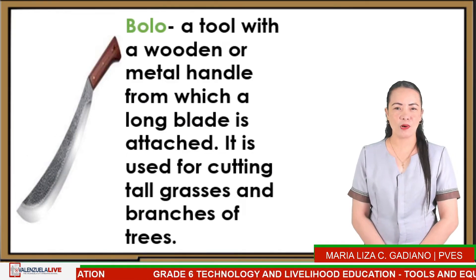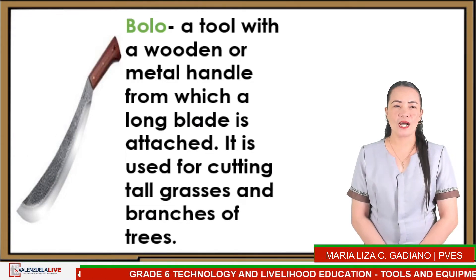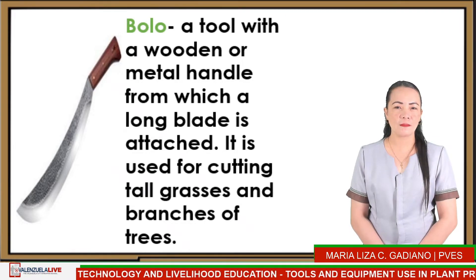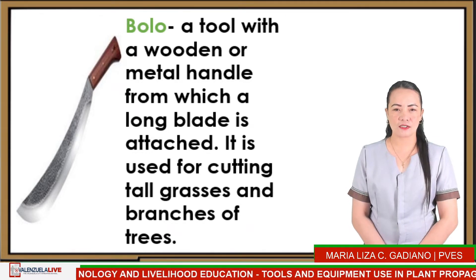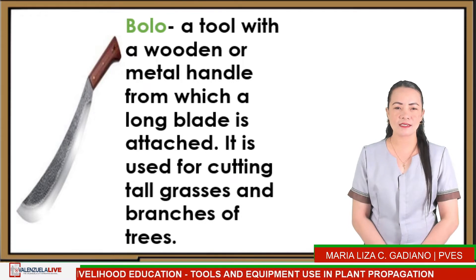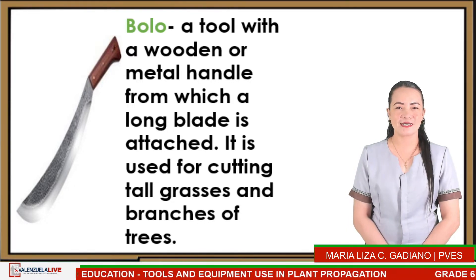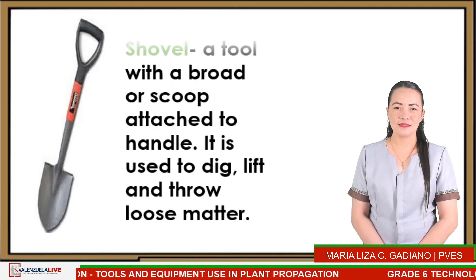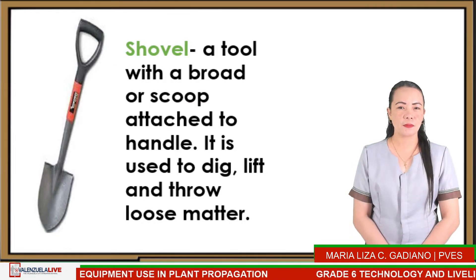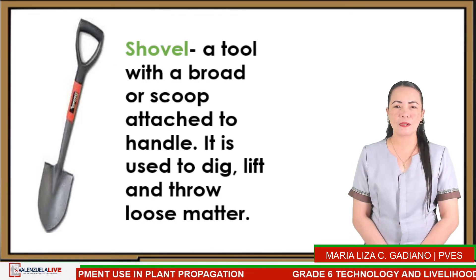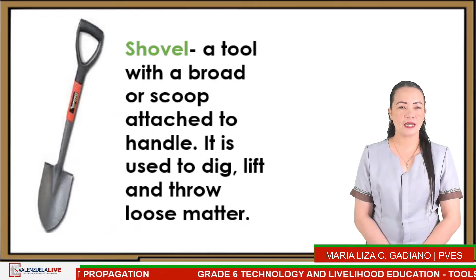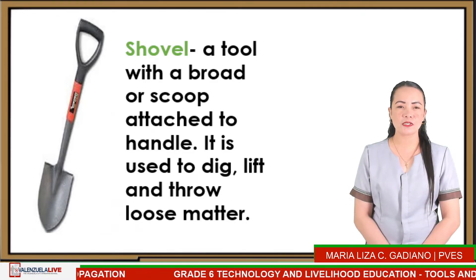Next is CROWBAR — a straight, heavy iron bar pointed at one end, about 4 feet in length, used for digging holes. Next is BOLO — a tool with a wooden or metal handle from which a long blade is attached, used for cutting tall grasses and branches of trees. Next is SHOVEL — a tool with a broad scoop attached to a handle, used to dig, lift, and throw loose matter.